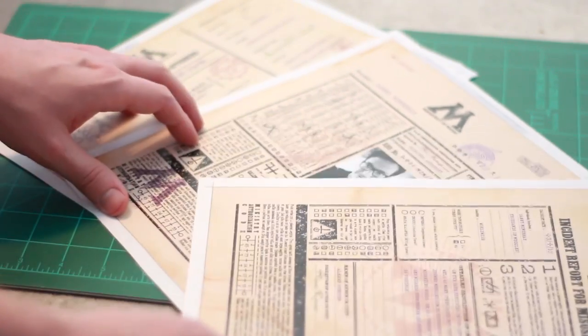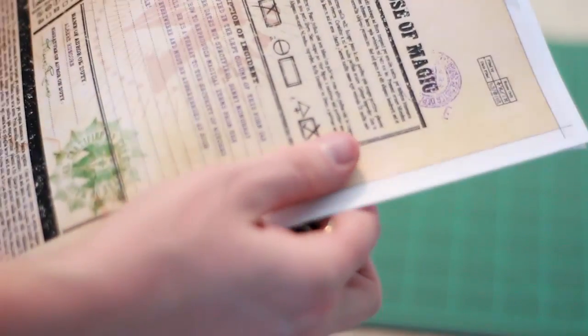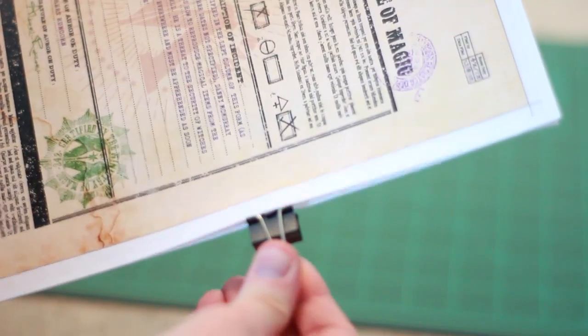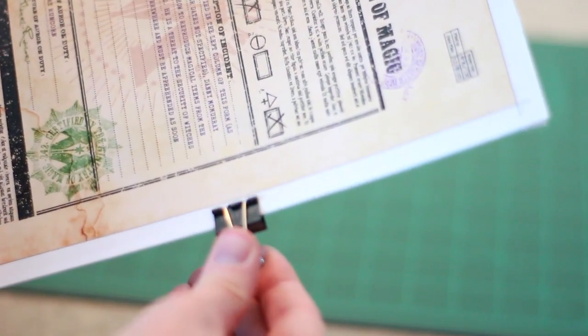To make it easier, you can cut the incident report, the personal file, and the warrant all at the same time. To do that, just line them all up as best as you can, stack them up and line up the edges, and then just use paper clamps to clamp all the pages together. We're going to do this on all four edges.